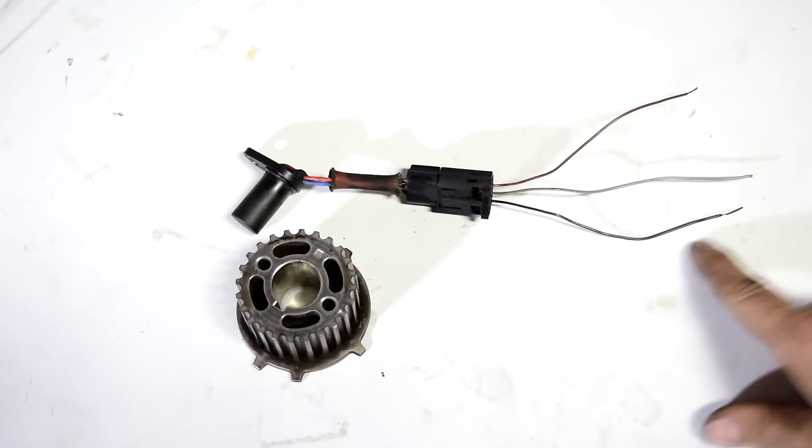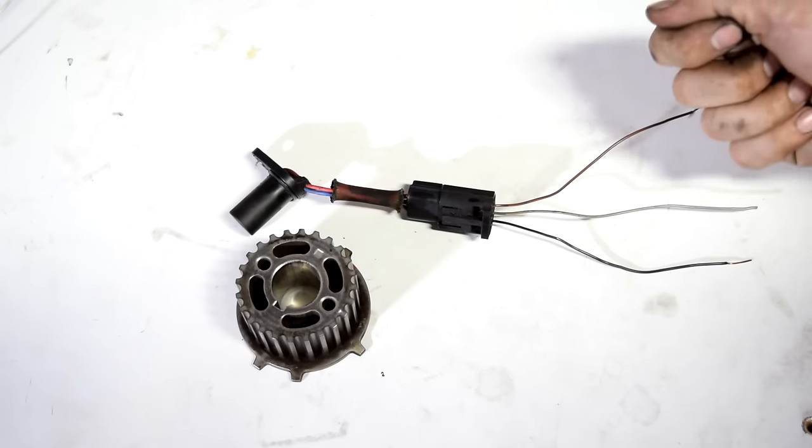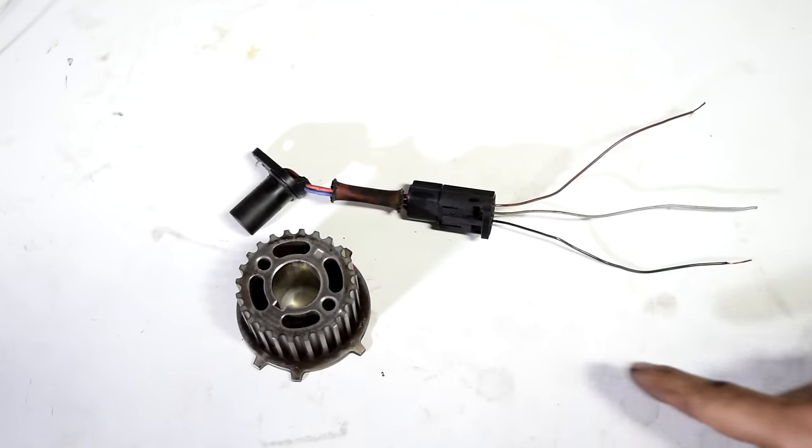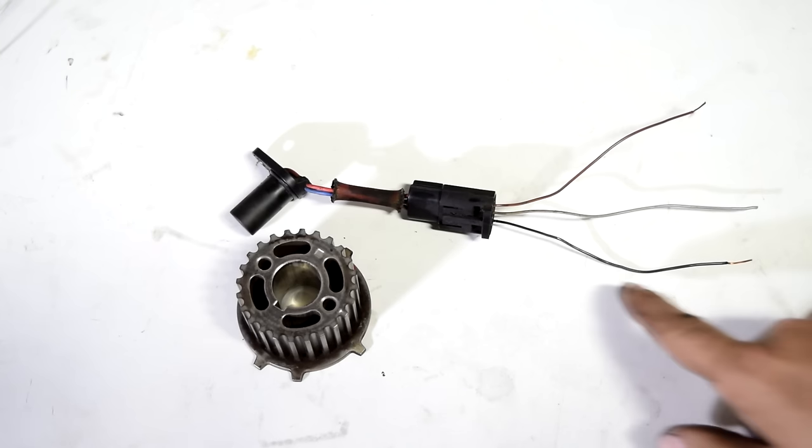They also have a grounding wire as well. So with the key on or in the cranking position you'll always have a constant supply of 12 volts to these sensors and you'll also always have a constant ground.